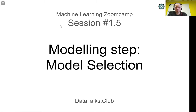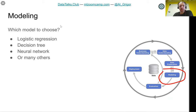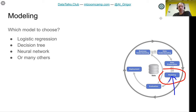Welcome back. This is our fifth lesson of session number one of Machine Learning ZoomCamp, and we'll talk about the modeling step and the process of selecting the best model, which is called the model selection process. In this step, we try different models — we already have the data extracted from the previous step — and our goal is to choose the best model.